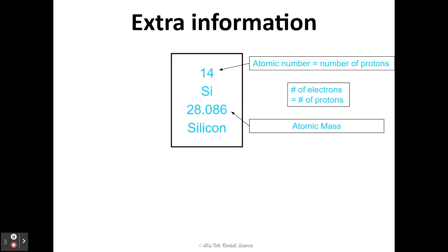A little bit of extra information we are going to add to the periodic table. I used lithium as my example because it's on the left-hand side and there's a lot of extra space to write. Basically, the number at the top represents the atomic number, and your atomic number is the number of protons found in that element. The number below is your atomic mass. The symbol — for example Si — is what we use to represent the name of the element, so silicon gets the symbol Si. Most symbols make sense, but some do not — for example, copper's symbol is Cu even though copper is spelled C-O-P-P-E-R. A lot of that has to do with the original Latin names.